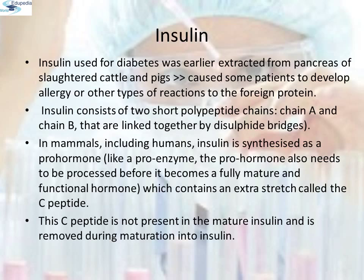Insulin. Management of adult onset diabetes is possible by taking insulin at regular intervals of time. If enough human insulin was not available, one would have to isolate and use insulin from other animals — but would that insulin be just as effective as that secreted by the human body, or would it elicit an immune response? Insulin used for diabetes was earlier extracted from the pancreas of slaughtered cattle and pigs. Insulin from an animal source, though effective, caused some patients to develop allergy or other types of reactions to the foreign protein.